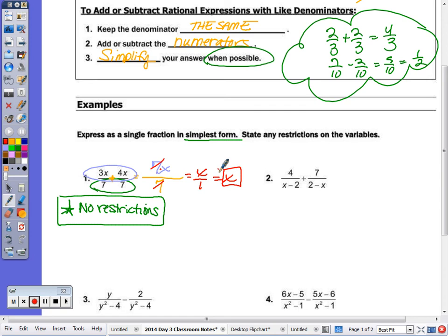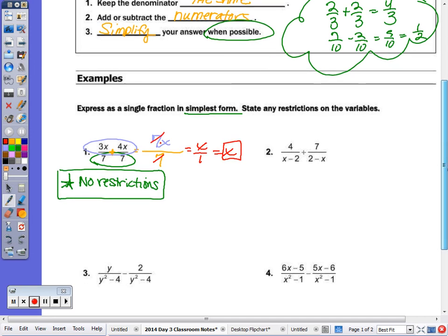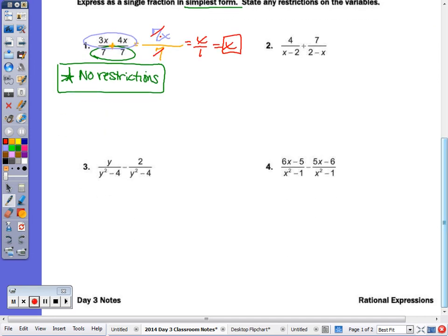Now, number 2, the denominators are not the same, so we'll come back to that one. That's the negative 1 rule, so you can think about that. But number 3 and number 4, they are the same.